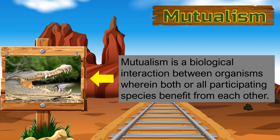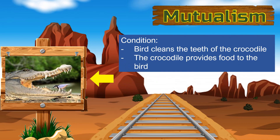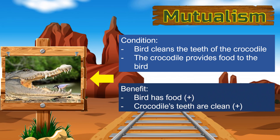For example, a crocodile and some species of bird. In this picture, the bird cleans the teeth of the crocodile. On the other hand, the crocodile provides food to the bird. Both organisms give something to each other. The bird offered a service while the crocodile gave food. Both organisms also received something in return as a result of the service they provided. The bird has food, and the teeth of the crocodile becomes clean. The positive sign means that both organisms benefit from each other.